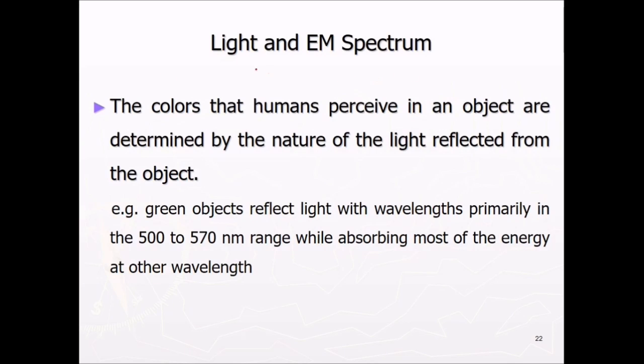This light and electromagnetic spectrum, the colors that humans see or perceive in an object, are determined by the nature of the light, which is reflected from the object. So if you say an apple, it looks red, because most of the red light is been reflected. For example, green objects reflect light with a wavelength primarily in this range 500 to 570, while absorbing most of the energy in other wavelengths.